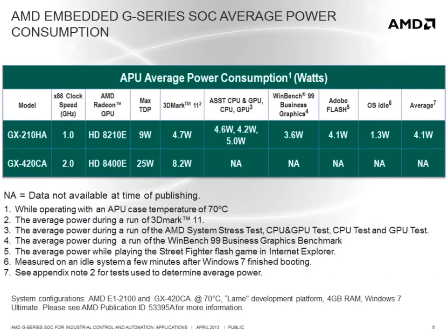It is important to emphasize the difference between TDP and the likely power consumption that will be seen on a G-Series SOC based design running an actual application. The TDP of a part can be misleading since it doesn't accurately represent the actual power drawn during operation for a particular embedded application, which often performs very specific tasks. While running 3D Mark 11, which gives the GPU, CPUs, and a portion of the I/O a significant workout, the 9 watt TDP version of the SOC only consumes 4.7 watts average power, and the high-performance quad-core GX420CA consumes just over 8 watts average power. So when evaluating thermal requirements and power limits of a system, it is important to consider and test the power consumption while running the actual application.